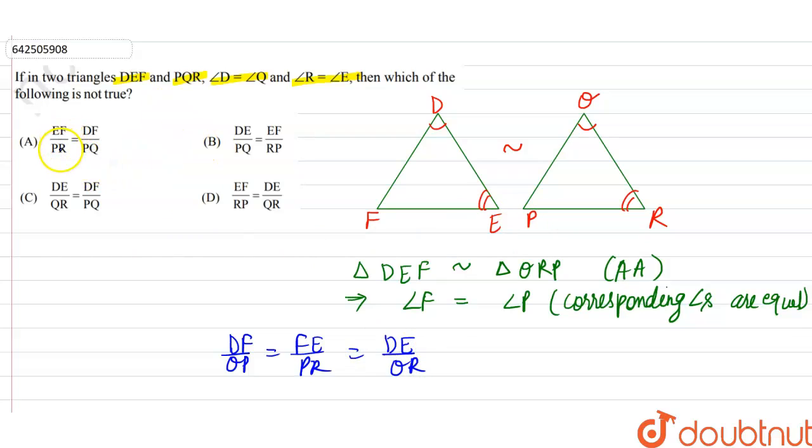Now from options, EF upon PR is equal to DF upon PQ. This is true. EF upon PR is equal to DF upon QP, so this option is true.